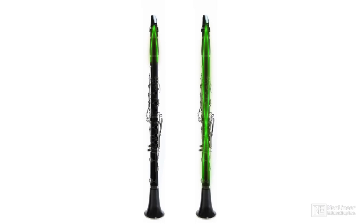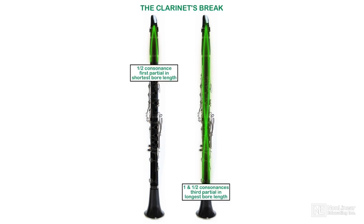Probably the greatest basic challenge to clarinet technique comes at the point where these highly compressed fundamentals cross over to the first overblown notes. This, once again, is the break — bridging between the top throat tone of B-flat and the first overblown note of B-natural.